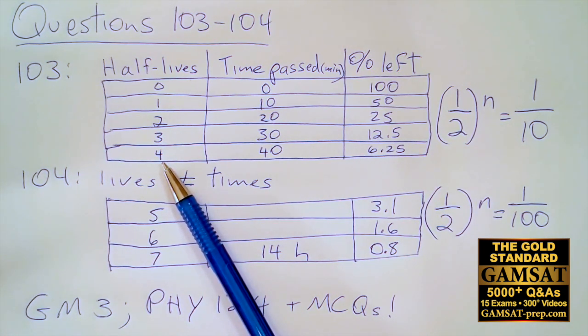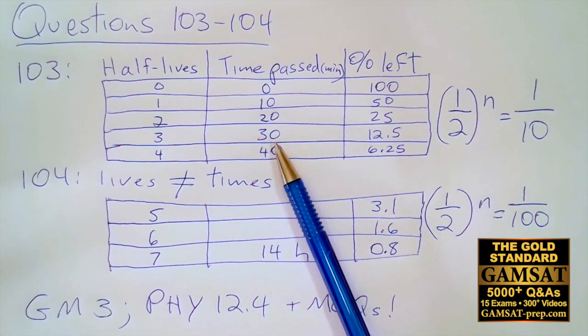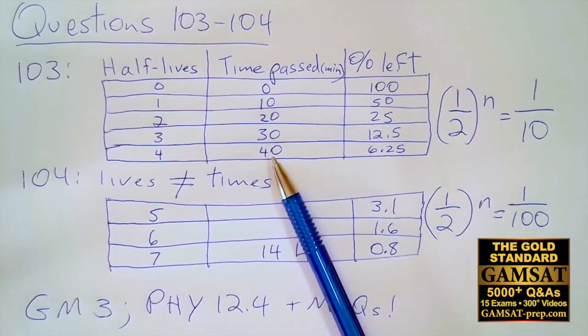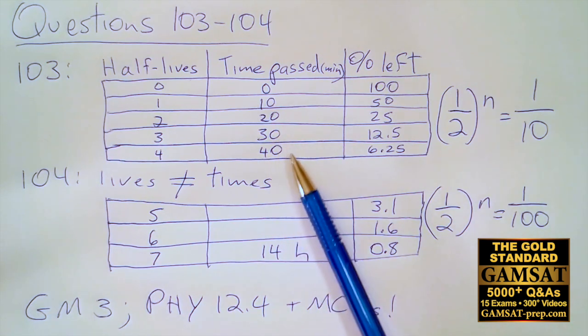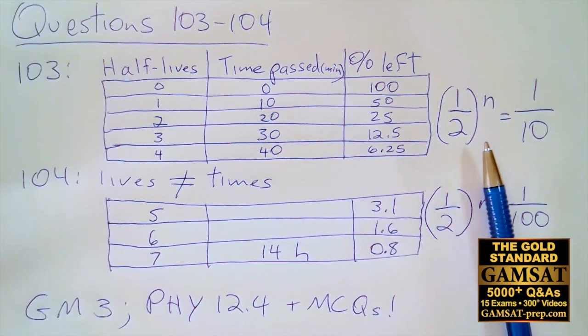That means it has to be between 3 and 4 half-lives. The question told us one half-life is 10 minutes, so 3 half-lives is 30 minutes, 4 half-lives is 40 minutes. So it has to be between 30 and 40 minutes. I think this is a very efficient way to solve the problem.